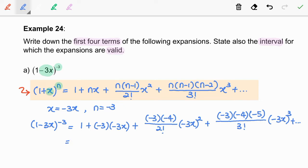Next, we are going to simplify this expression. So, we got 1 plus 9x plus 54x squared plus 270x cubed plus dot dot dot as our final expansion.